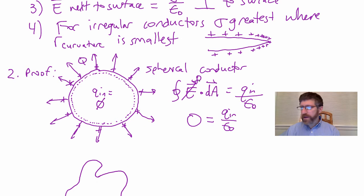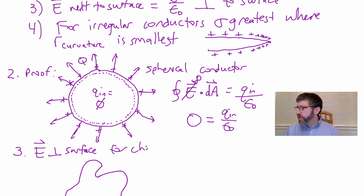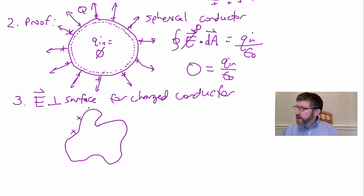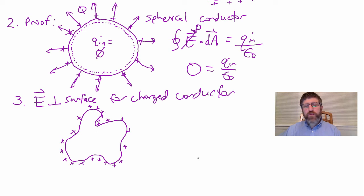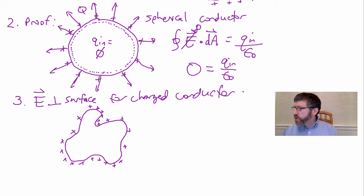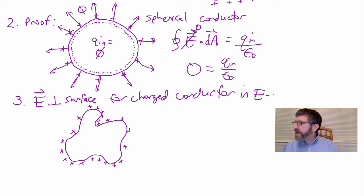Now I'm going to prove property three: the electric field must be perpendicular to the surface of a conductor in electrostatic equilibrium for a charged conductor. Let's say we have this irregularly shaped conductor — probably higher surface charge density where there's a lower radius of curvature. Here is the proof that it's perpendicular. We'll also prove in a few minutes that the electric field has magnitude sigma over epsilon naught.